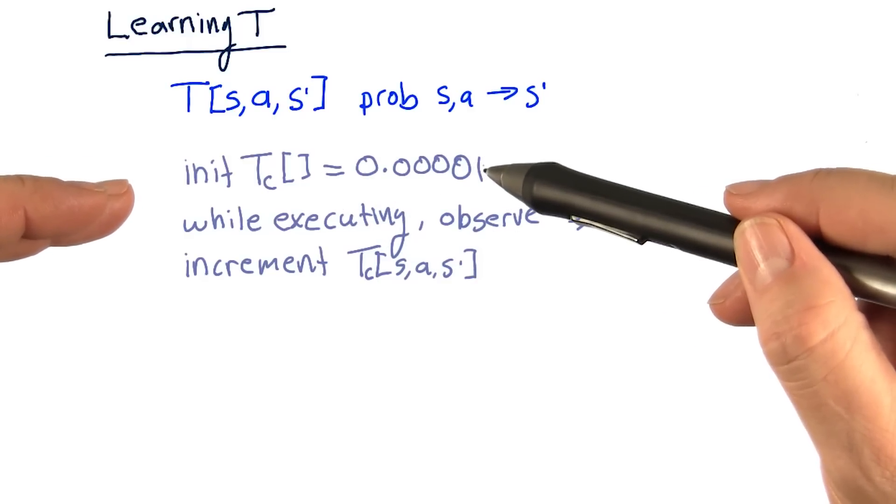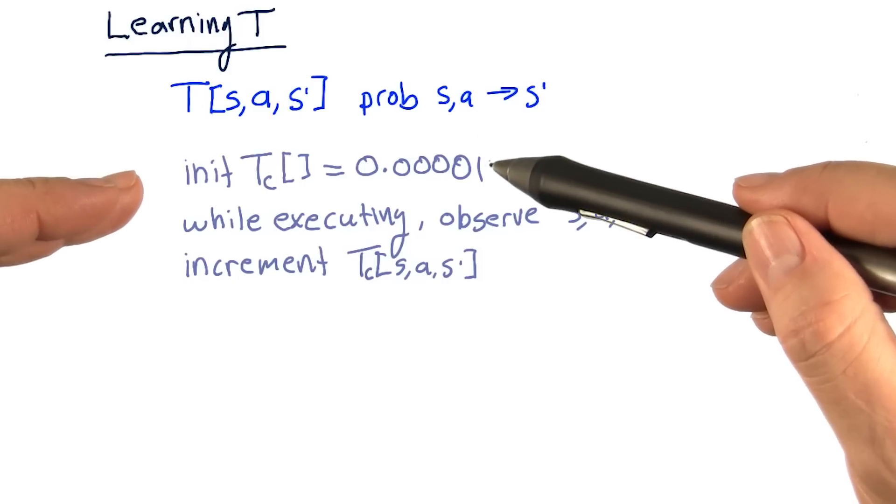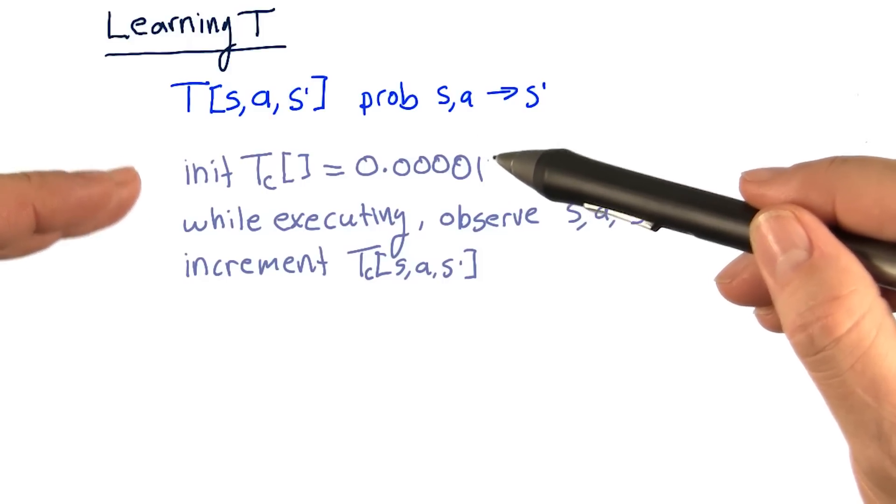The reason for that is later on, you'll see that if we don't do that, we could get a divide by zero situation.